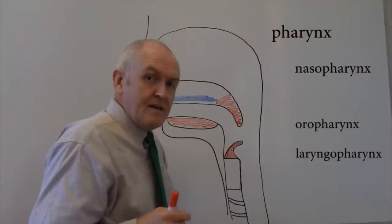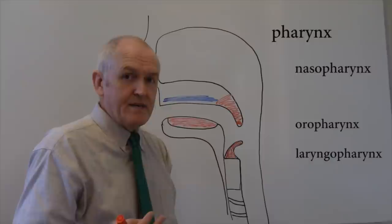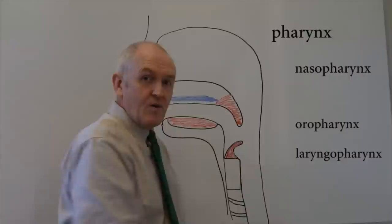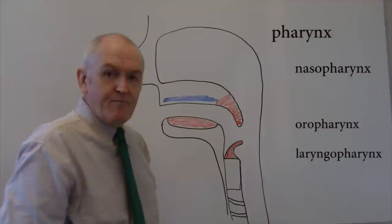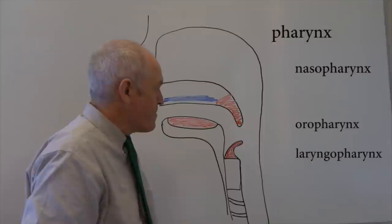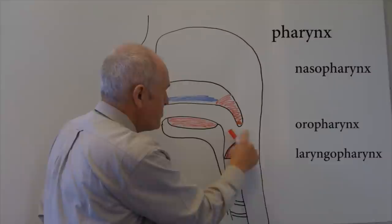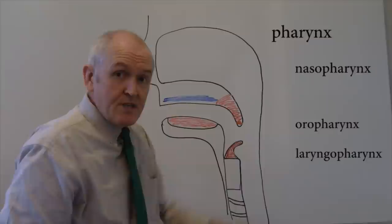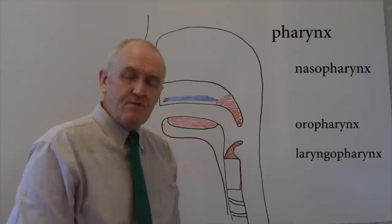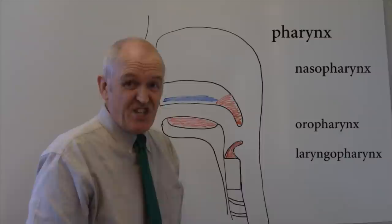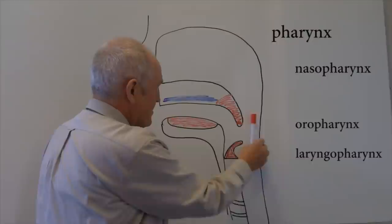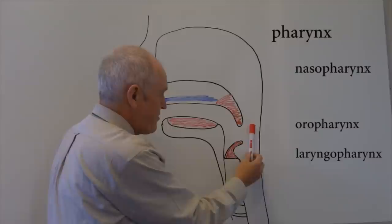After the bolus enters the oropharynx, the process becomes autonomic, controlled by the autonomic nervous system. Sensory nerves in the wall of the oropharynx - branches of the ninth cranial nerve, the glossopharyngeal, and the tenth, the vagus nerve - send messages up towards the medulla oblongata of the brain stem. In the medulla oblongata is the swallowing center, or deglutition center, which controls this process. The bolus of food is now in the oropharynx.